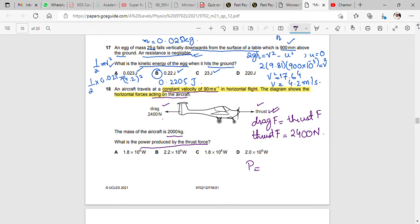Power is equal to F into V. Now, what do you have? The force is 2400. V is given to you which is 90 meters per second. If you multiply both, you have the answer is 21600 watts.